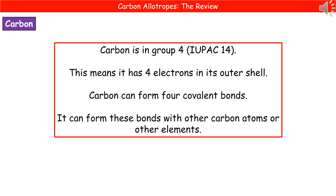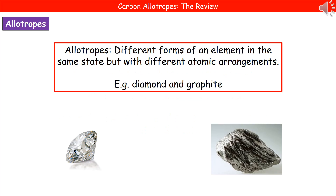So because we've got 4 electrons in the outer shell, carbon can form 4 covalent bonds, and it can form those bonds with either other carbon atoms or with other elements. One word we need to know the meaning of is the phrase allotrope. When we're talking about an allotrope, we're talking about different forms of an element in the same state, but with different atomic arrangements.